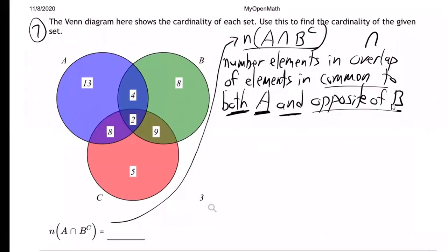So that's what they're saying. The number of elements in the overlap, so that means in common to both A and the opposite of B, B complement. Okay, so what is that? How many are in A and the opposite of B?